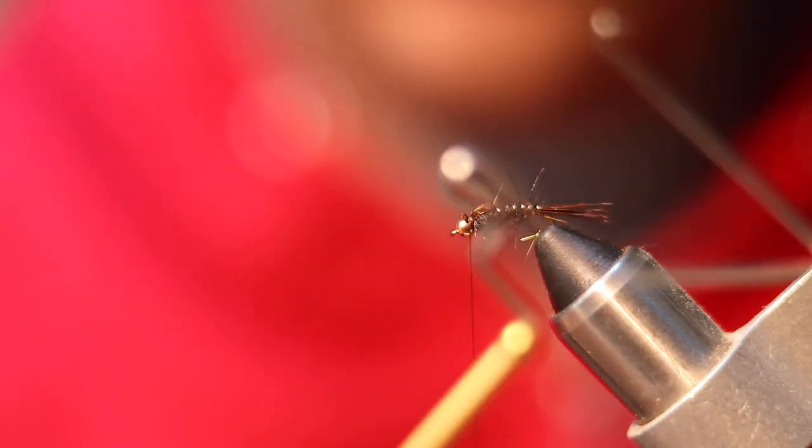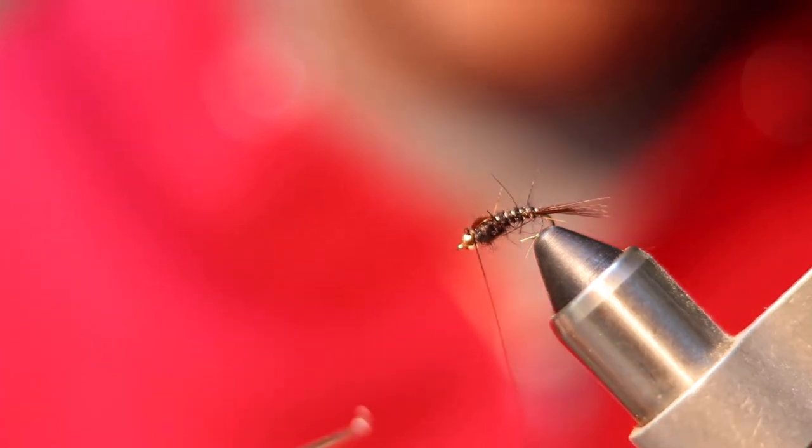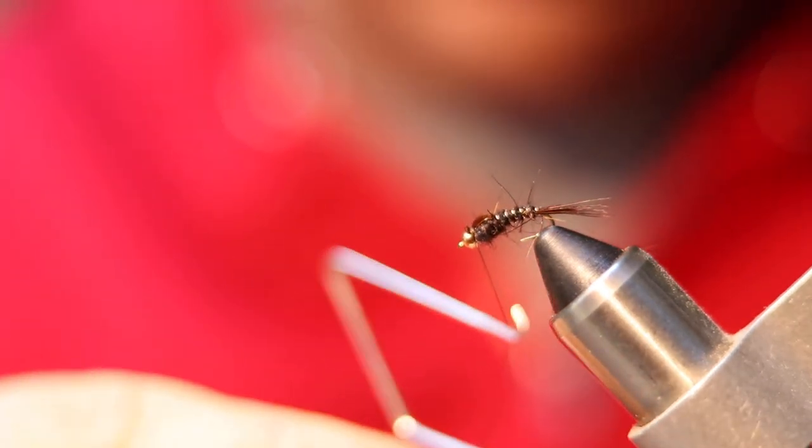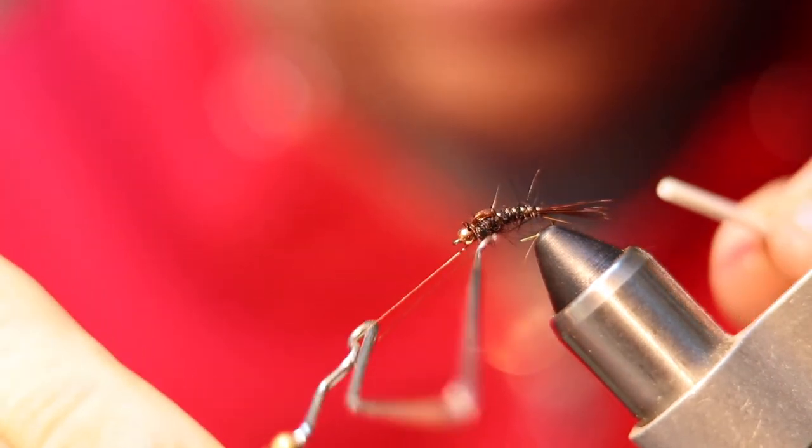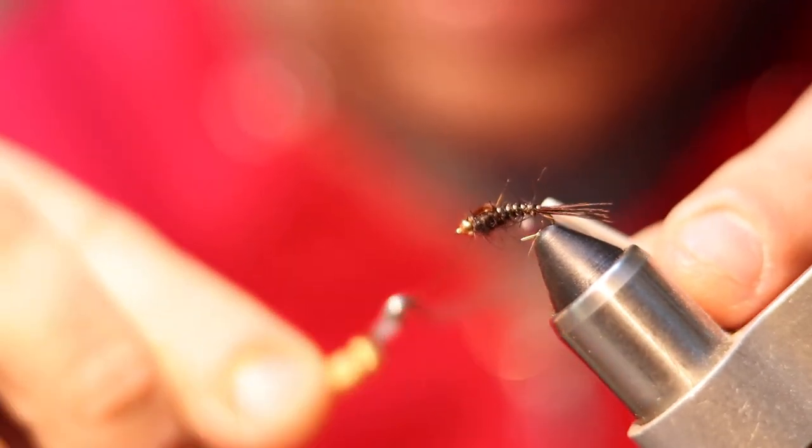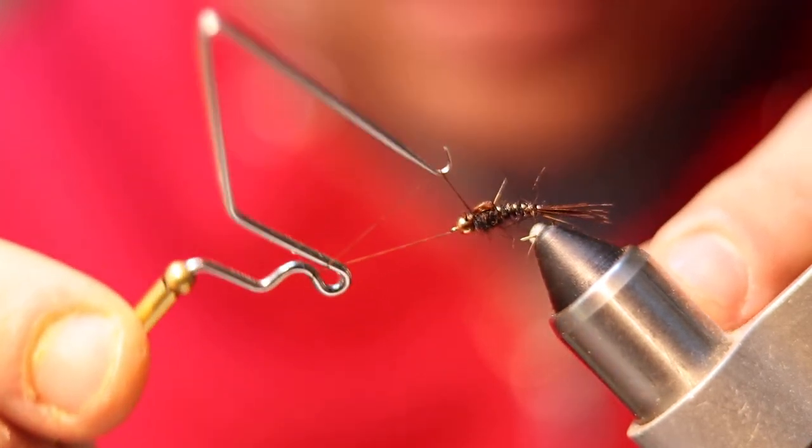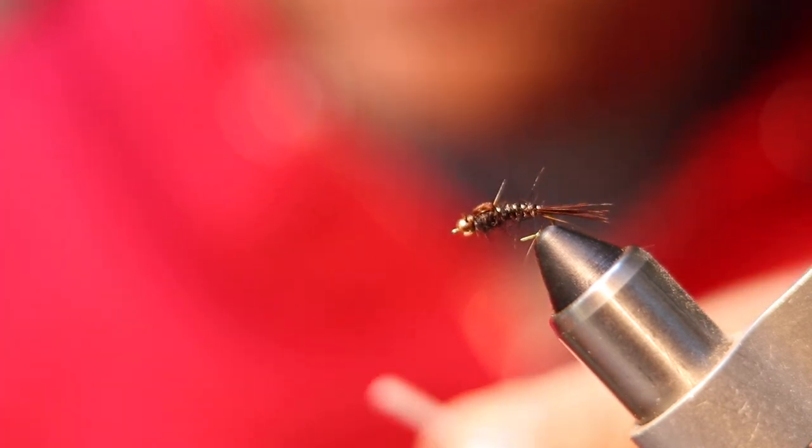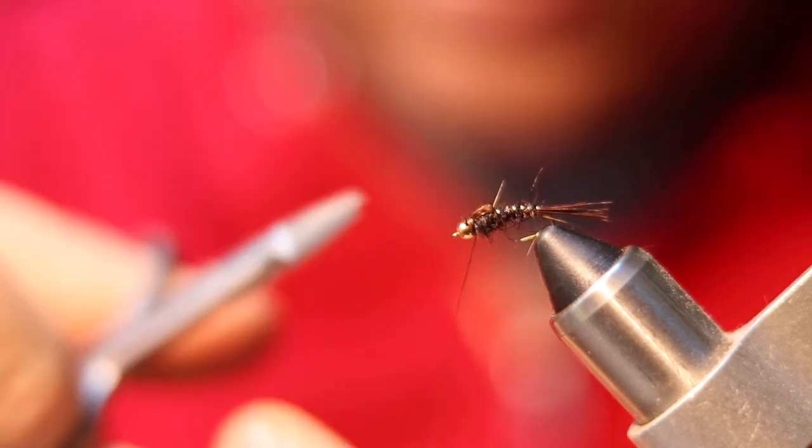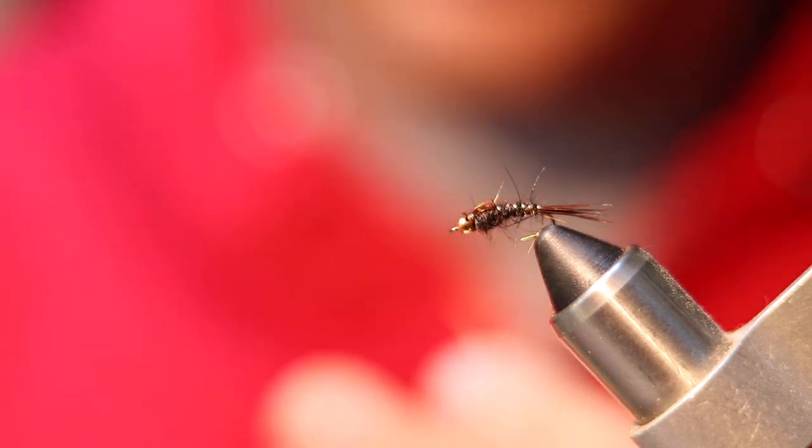Now you're going to take your whip finishing tool and whip finish the fly. When I was learning to tie, this was the hardest part for me, but I also used to do it by hand. I would say that this is one of the first tools that I picked up to accomplish this task—it really made a big difference. Now you're just going to take your scissors or razor and cut the tag end off there.